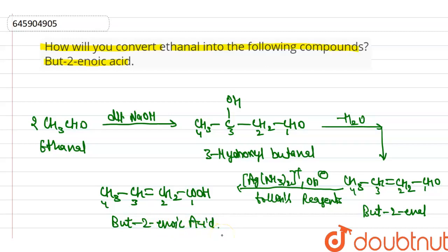So that is the conversion from ethanol to but-2-enoic acid. Thank you.